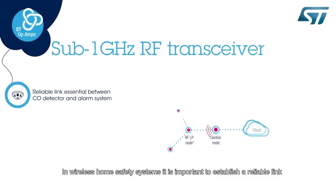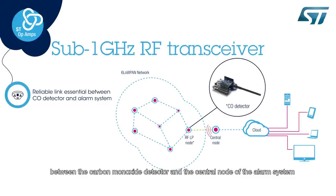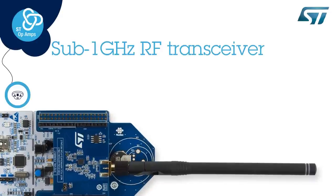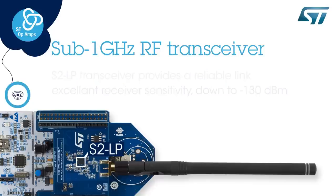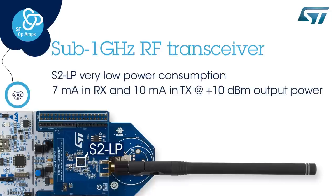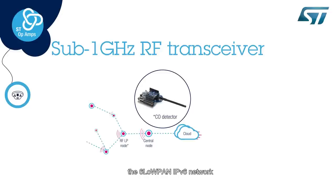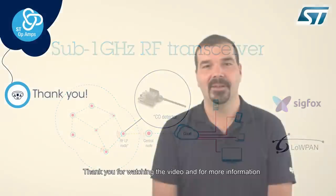In wireless home safety systems, it is important to establish a reliable link between the carbon monoxide detector and the central node of the alarm system. The ST's S2LP RF transceiver provides such a reliable link because of its excellent receiver sensitivity down to minus 130 dBm. ST's low power consumption of only 7 mA in receive mode and only 10 mA in transmit mode at plus 10 dBm output power enhances battery lifetime. The carbon monoxide detectors can be part of 6LoWPAN IPv6 networks, as well as connected to Sigfox installations, where ST is offering a ready-to-use software solution.